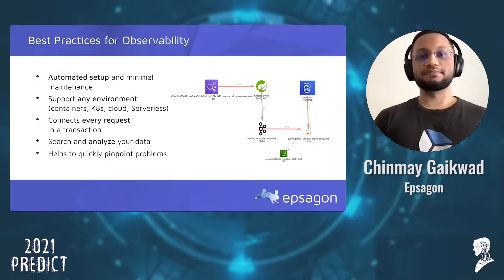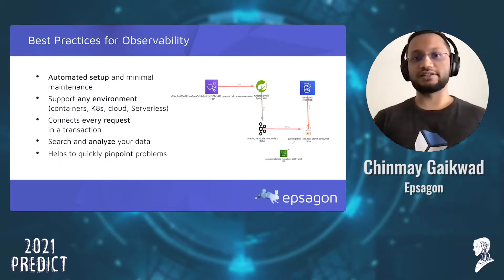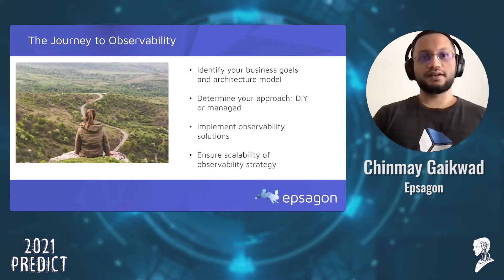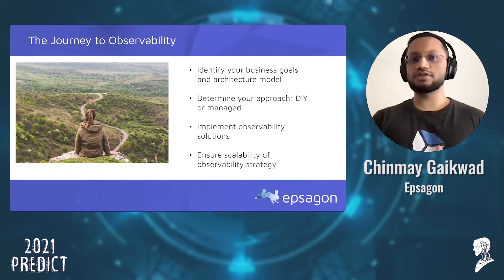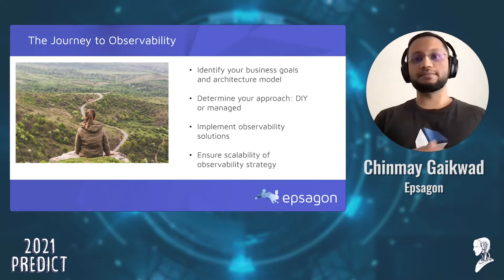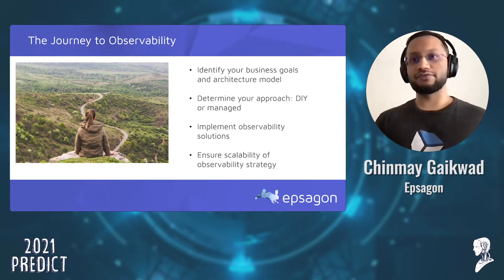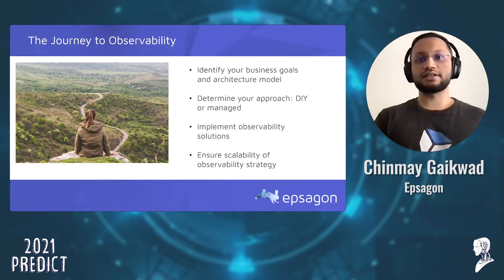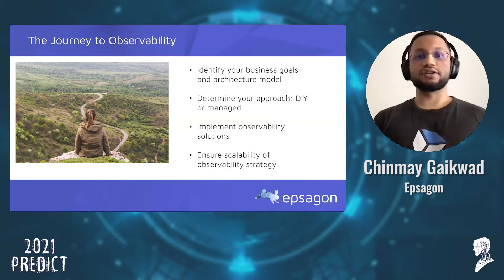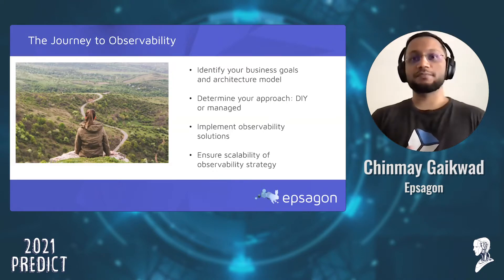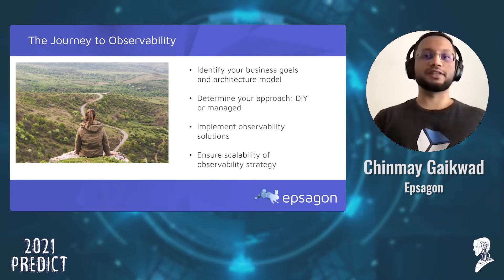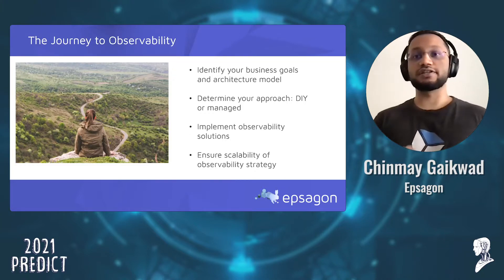Observability should not only tell you that something has gone wrong, but pinpoint where and why, to help reduce your mean time to detection and resolution. As a user, you should plan your observability journey well in advance. First, have clarity on business goals and architecture model. Then determine which approach works for you — DIY or managed — both have pros and cons. Implement the observability solution, keeping in mind that DIY requires significant development effort upfront, whereas managed may be a simpler integration. The final and most important point is ensuring scalability of the observability strategy, as microservices can scale really fast.